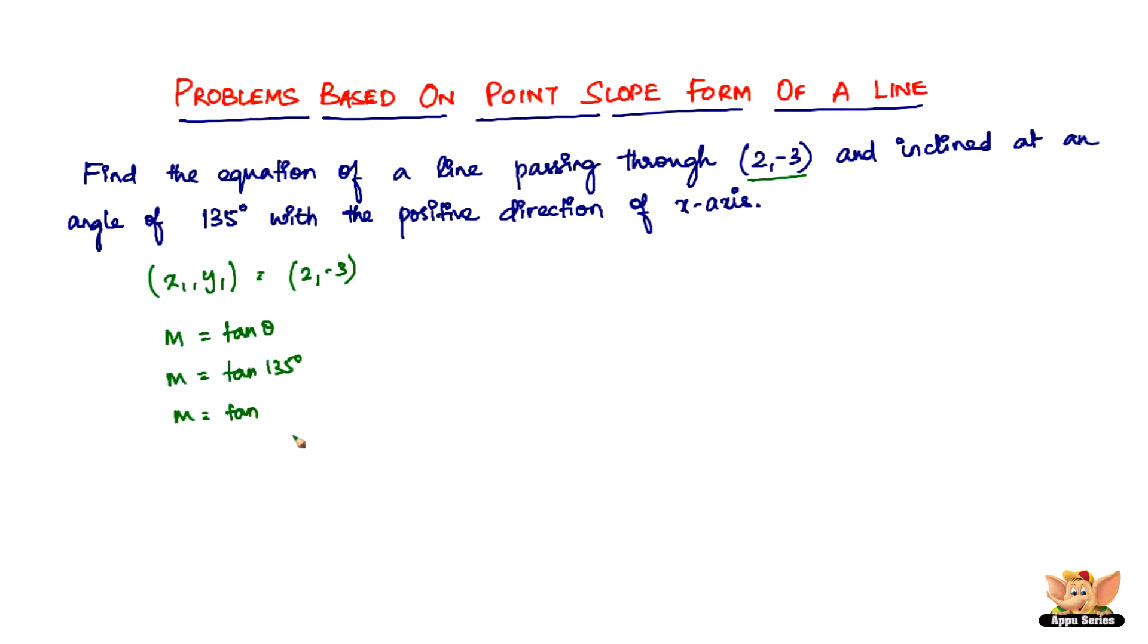tan(135°) can be written as tan(90° + 45°). This lies in the second quadrant where tan is negative, and 90 makes tan to cot, so we get -cot(45°). Since cot(45°) = 1, we have m = -1. So the slope of the given line is -1.